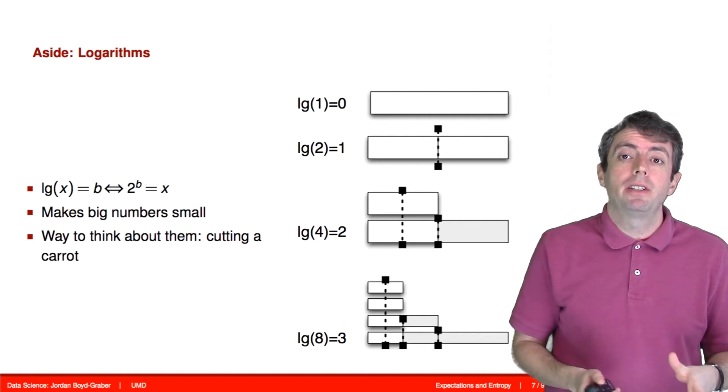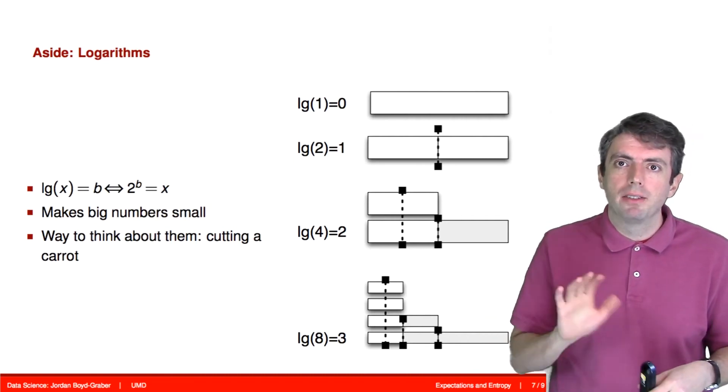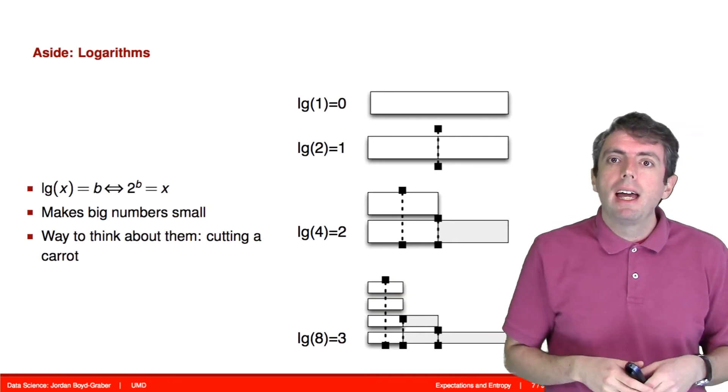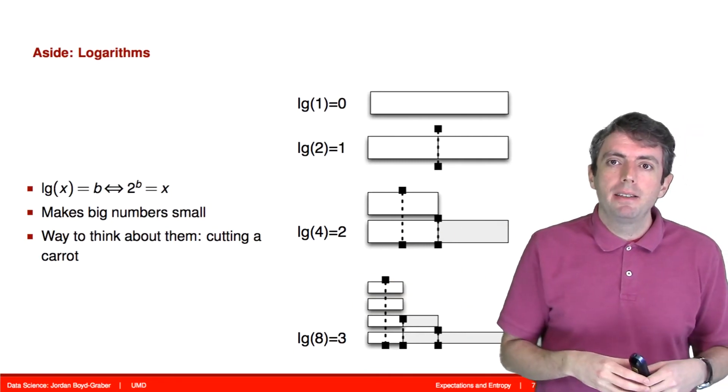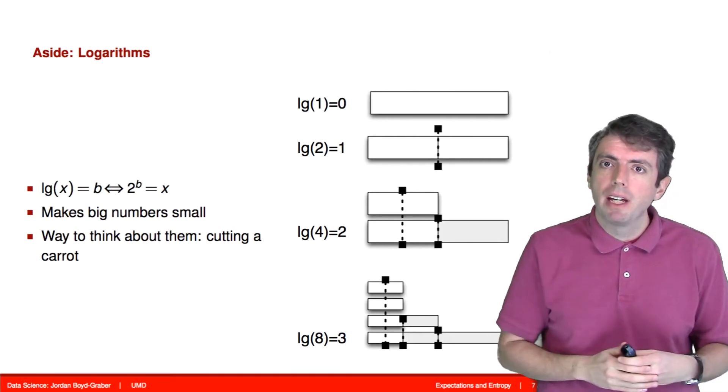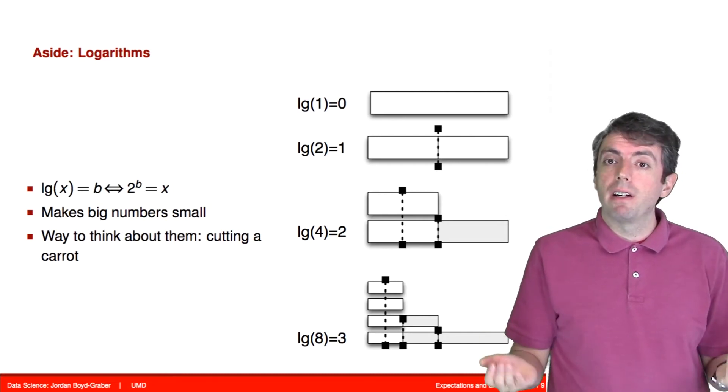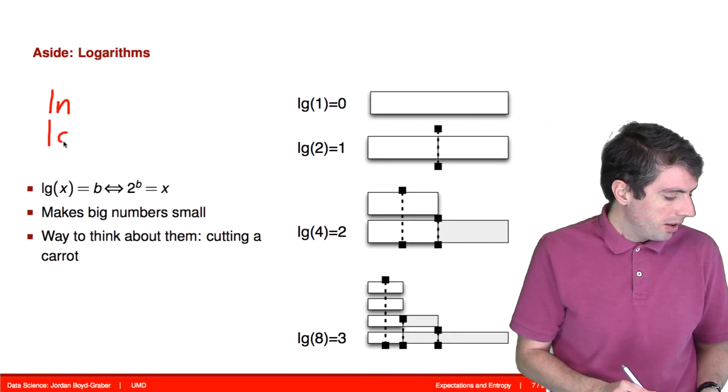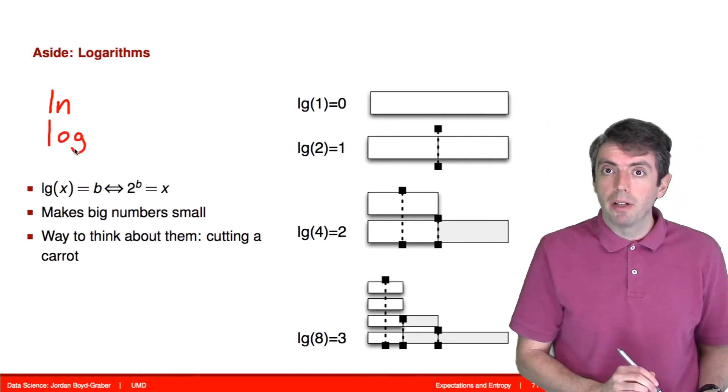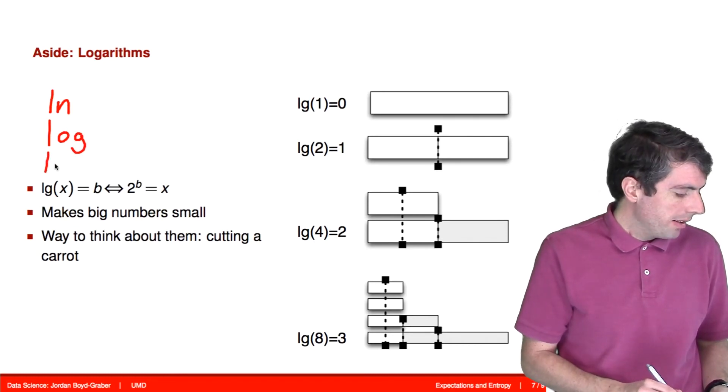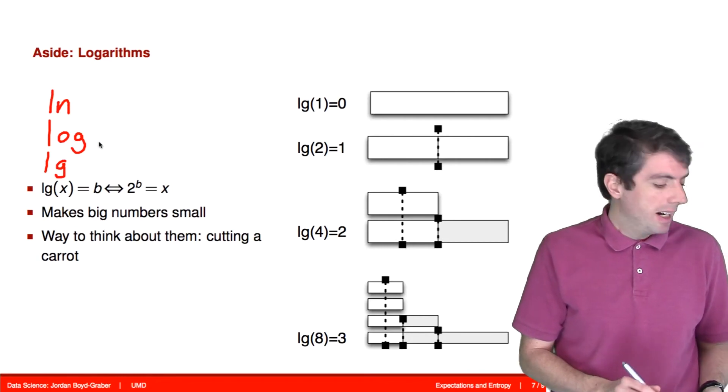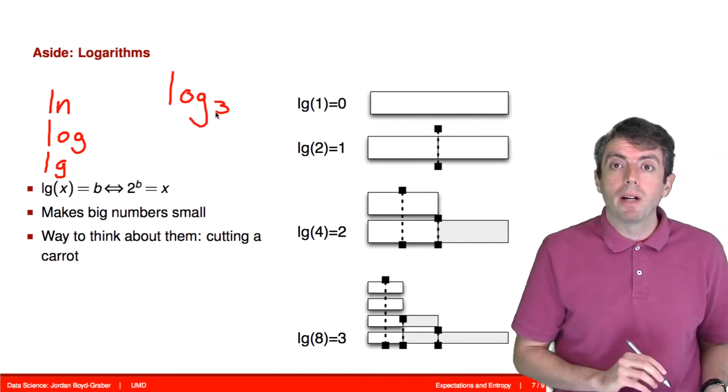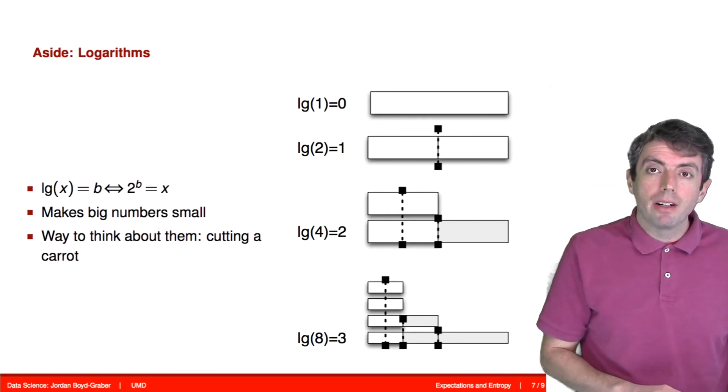Before I talk about the definition of entropy, I want to have an aside about logarithms. Hopefully everyone remembers what a logarithm is, but in case you've forgotten, a logarithm is basically a function that makes big numbers small, and the way that it makes big numbers small is by seeing how many times you can divide something. In this class, we'll talk about logarithms of various bases. We can talk about logarithms in base e, in which case we'll often write ln. Or logarithms in base 10, in which case we'll normally write log. Or if we're talking about logarithms in base 2, like we are now, we'll use lg. Or sometimes we'll talk about logarithms of a totally different base, say logarithms in base 3, and then we'll write log with a subscript 3.